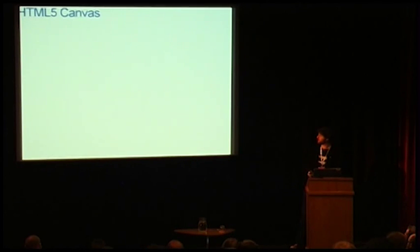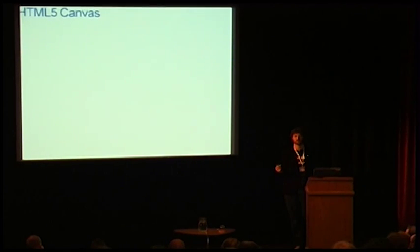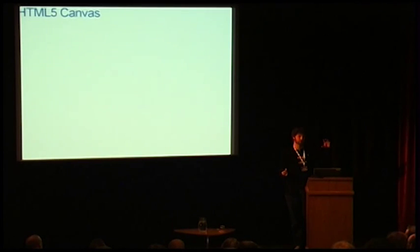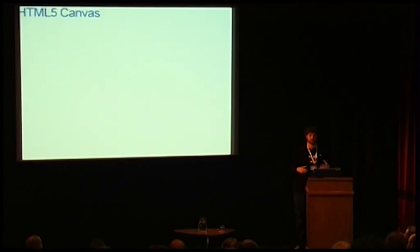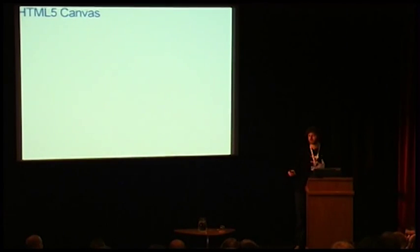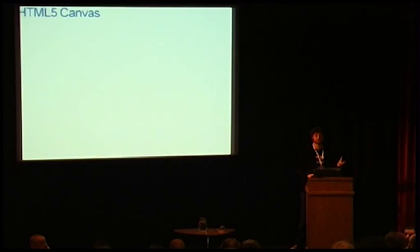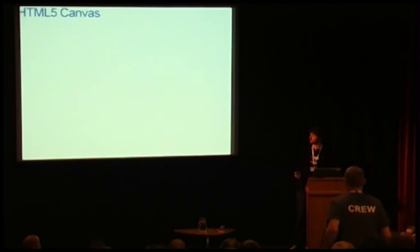The first is something called Canvas. There are two new graphics libraries in HTML5. Canvas deals with all the 2D stuff, and WebGL does all the 3D stuff. The idea is that they want to make it a lot easier to develop animations and drawings — the sort of stuff you would have historically used Flash for. You can now just do it in HTML.